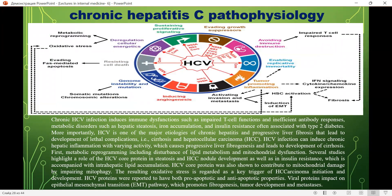Regarding pathophysiology: chronic hepatitis C infection induces immune dysfunction such as impaired T-cell function and inefficient antibody responses. Metabolic disorders such as hepatic steatosis, iron accumulation, and insulin resistance are associated with type 2 diabetes. HCV is one of the major causes of chronic hepatitis and progressive liver fibrosis leading to cirrhosis and hepatocellular carcinoma. HCV infection induces chronic hepatic inflammation with varying activity, causing progressive liver fibrogenesis.